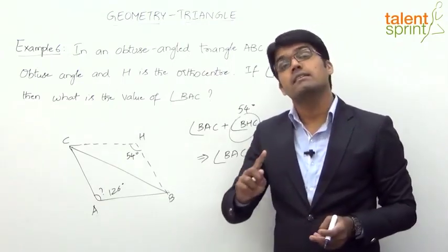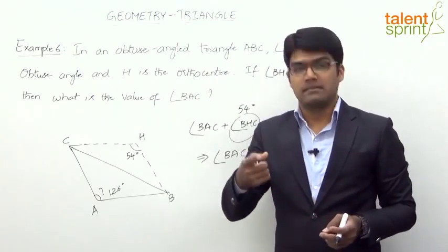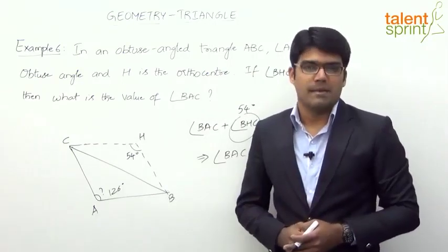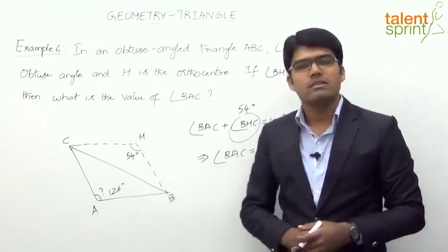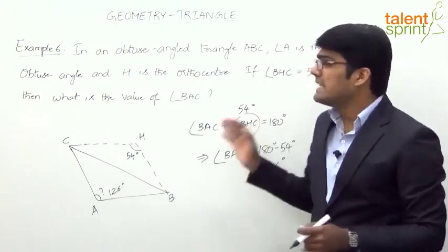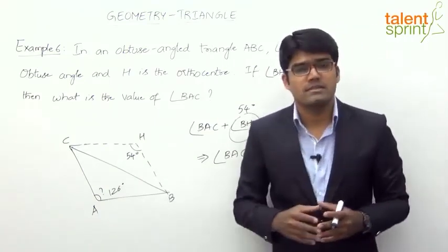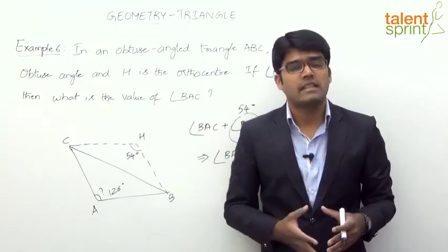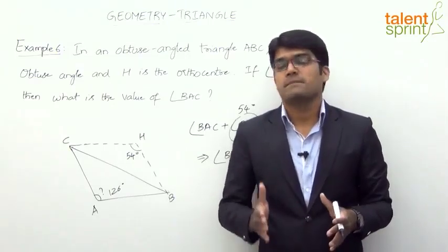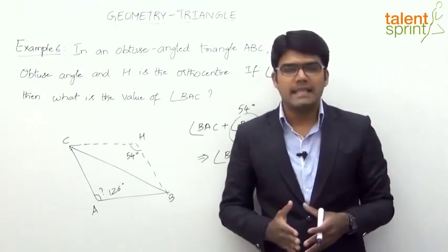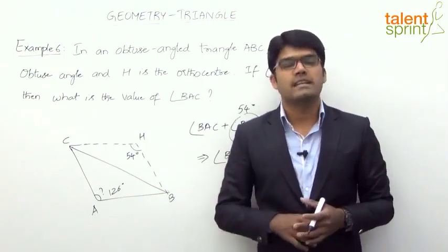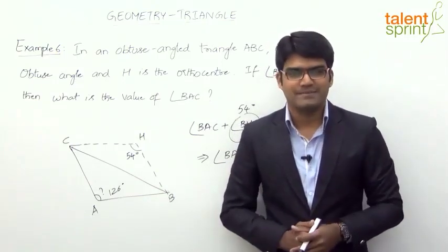The key point to remember is that the angle made by any side of the triangle with the orthocenter and the vertical angle are supplementary. Based on that, we can easily find the vertical angle and answer such questions without following a lengthy solution — just by remembering this one property.